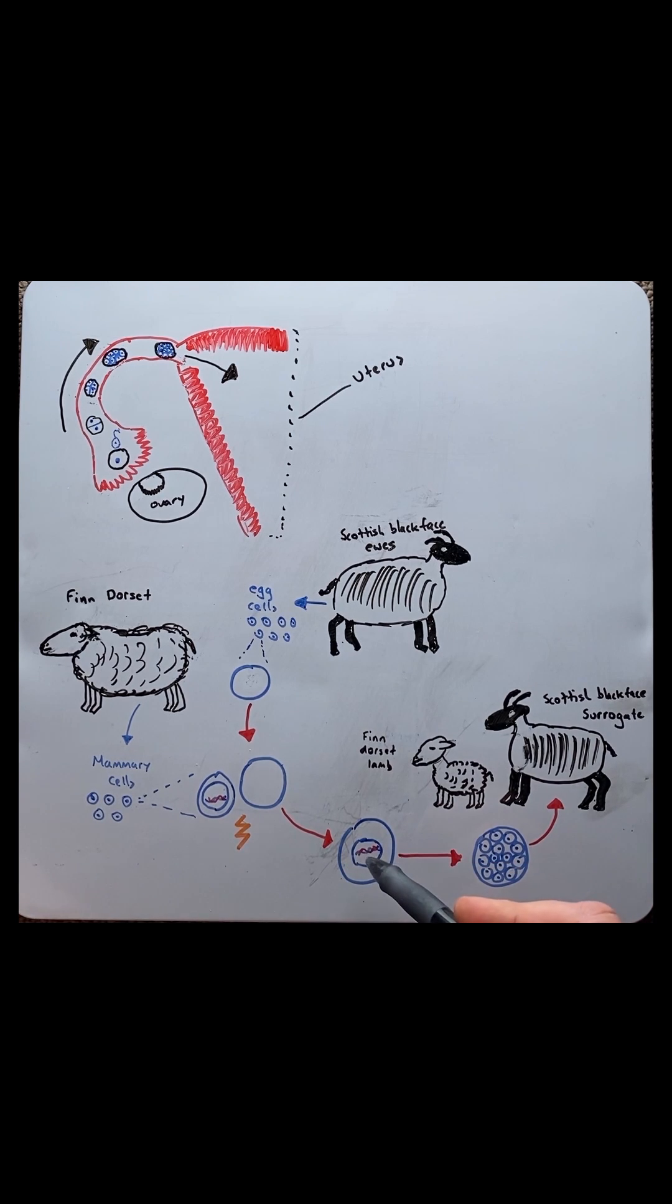From here we then have a zygote and we saw the same process occur. So then we move through to a blastocyst stage, like we saw at day five here. The blastocyst then was implanted into a Scottish black-faced surrogate mother.